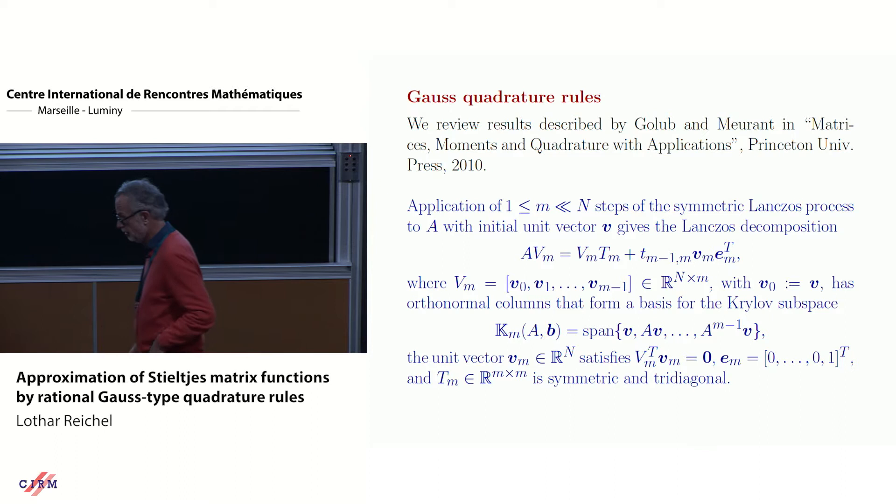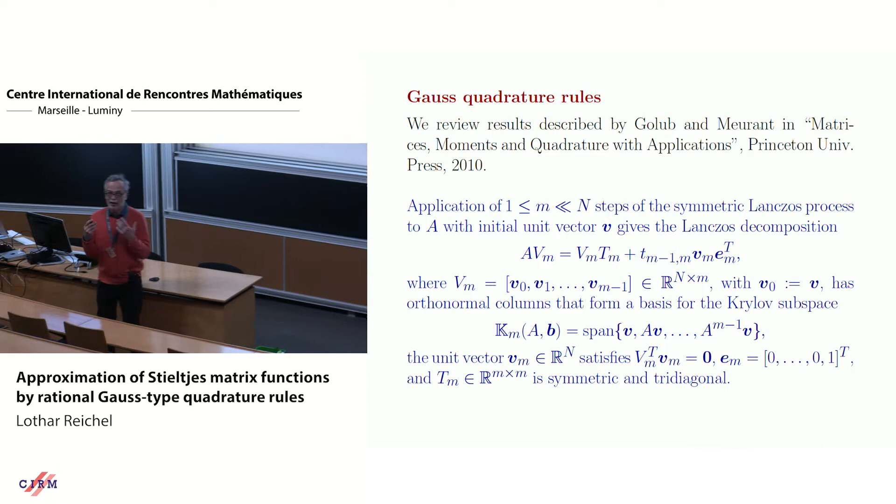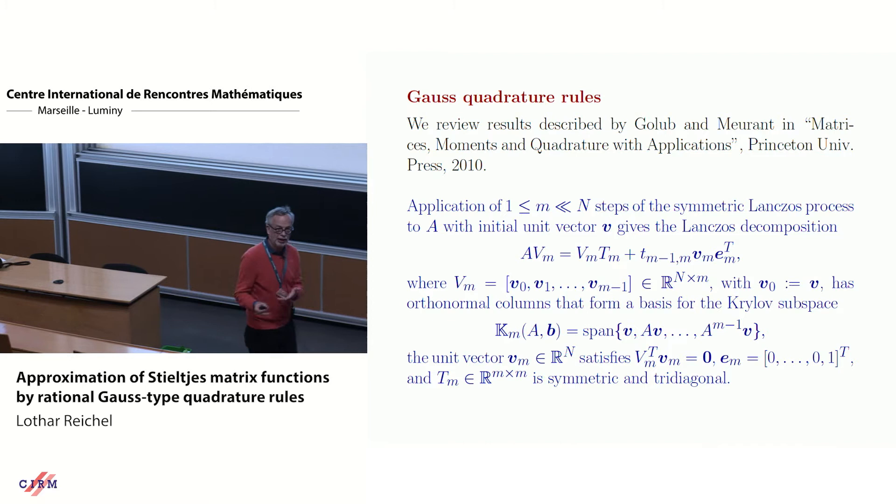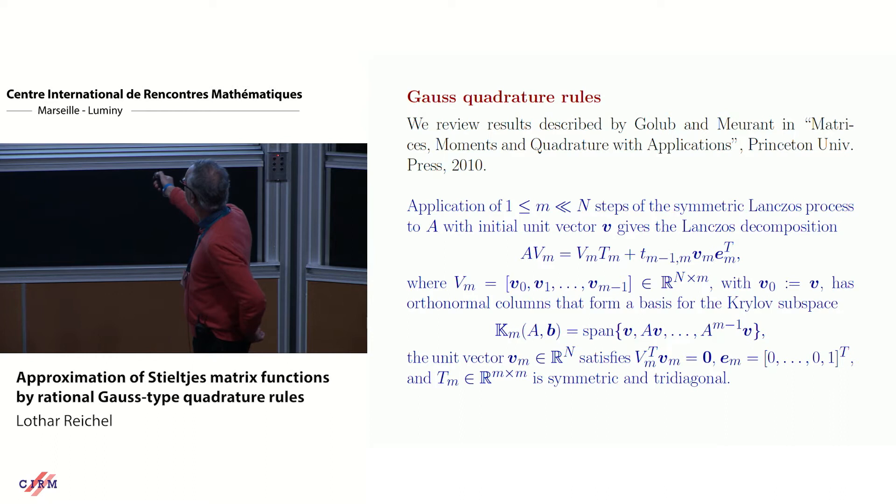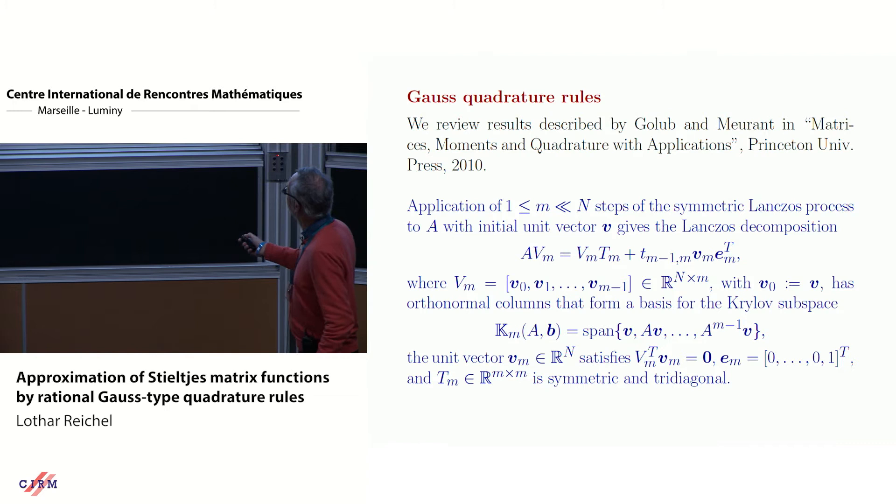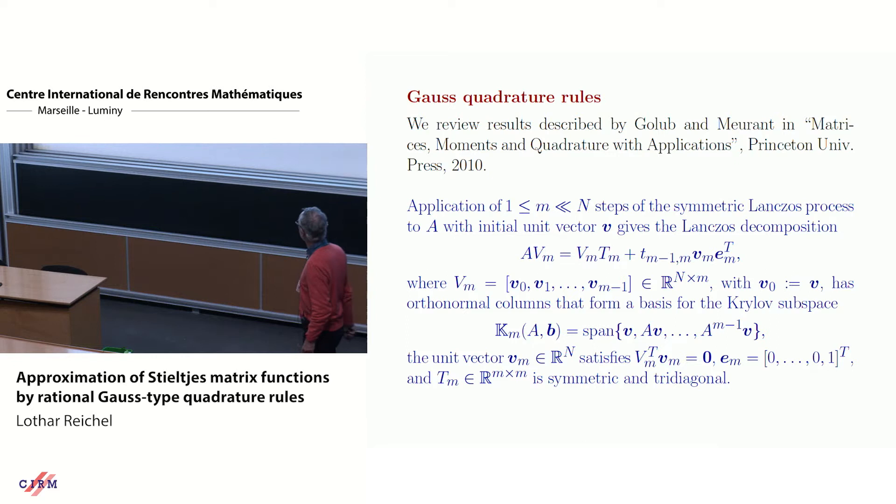My starting point is Girard's book from 2010, and there he discusses Gauss quadrature and how that relates to linear algebra. Personally, I think quadrature is kind of boring, but the connection with linear algebra I like. So here it is. M steps of the symmetric Lanczos process applied to A with the initial vector v gives this Lanczos decomposition. I assume here no breakdown because that's just a technicality here.